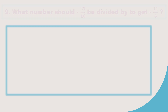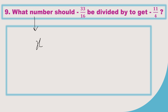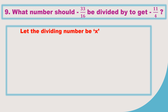Here is your 9th question: What number should minus 33 by 16 be divided by to get minus 11 by 4? The question is very simple. What number — whenever a question is given in this way, you should take that unknown number as x.